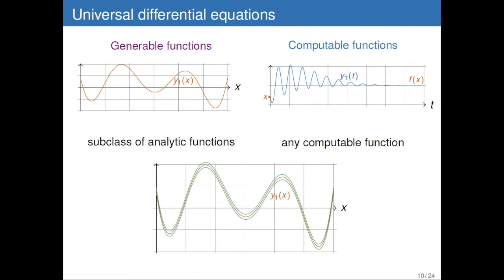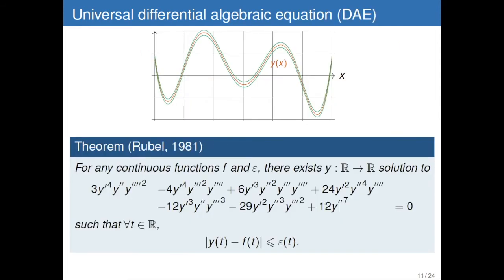That's the question I want to look at — something in between, like a uniform approximation scheme. As it turns out, I wasn't the first one to look at that question. Rubel, in 1981, looked at that question, although he came at it from a completely different perspective. He proved the following result, which you must really take some time to digest. The first time I read it, I thought it was clearly wrong, impossible.